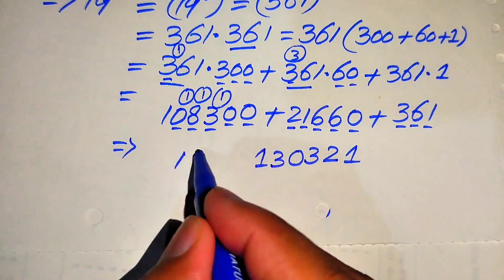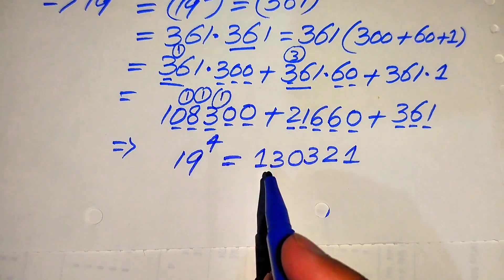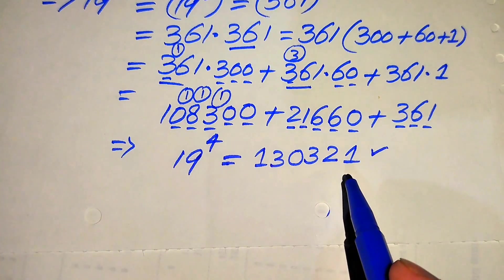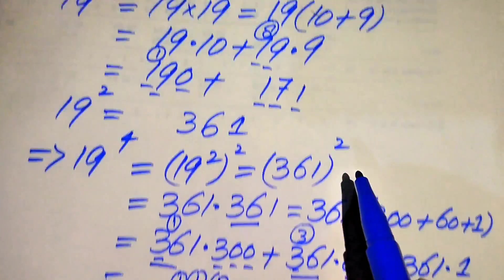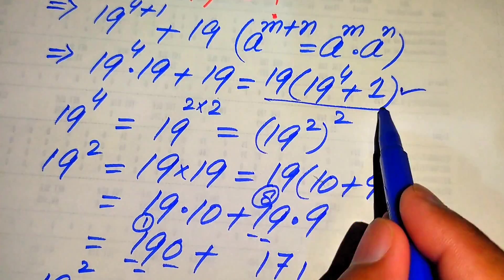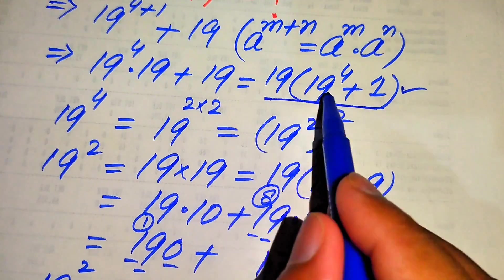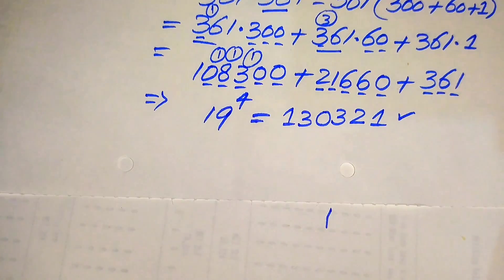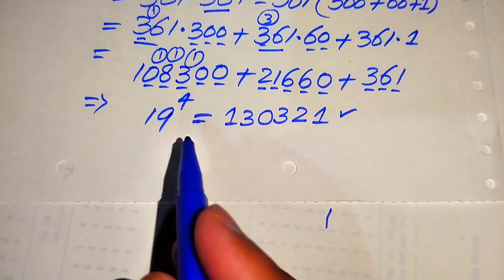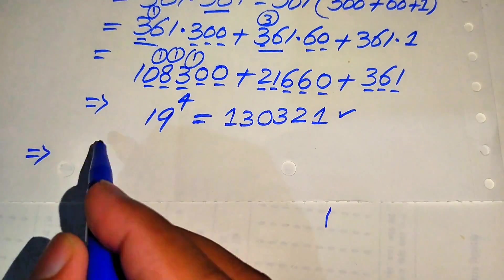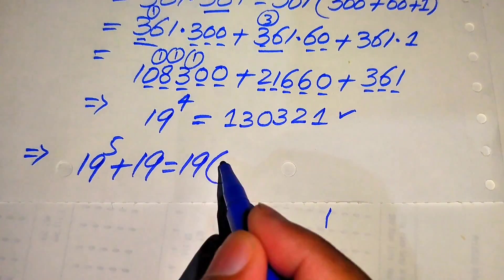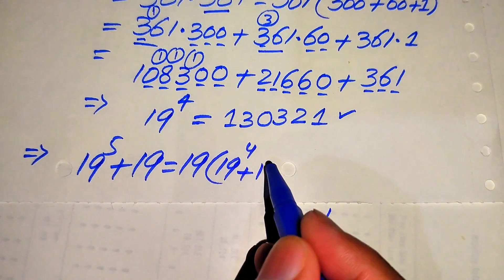This implies that 19 to the power of 4 equals 130321. Now we substitute this value back into our original expression: 19 to the power of 5 plus 19 equals 19 times of 19 to the power of 4 plus 1, which is 19 times the quantity 130321 plus 1.